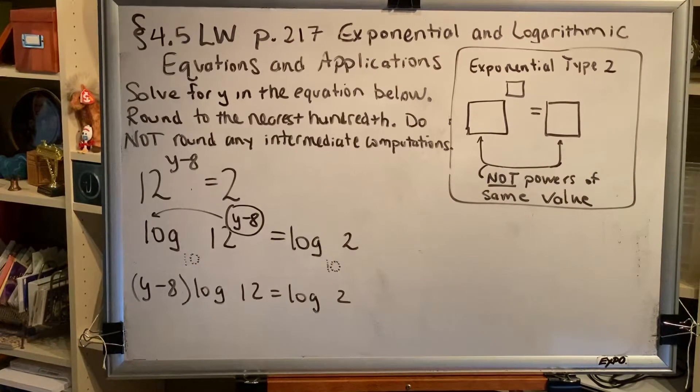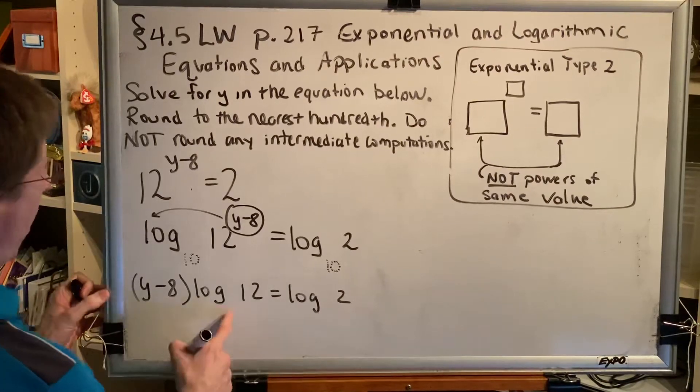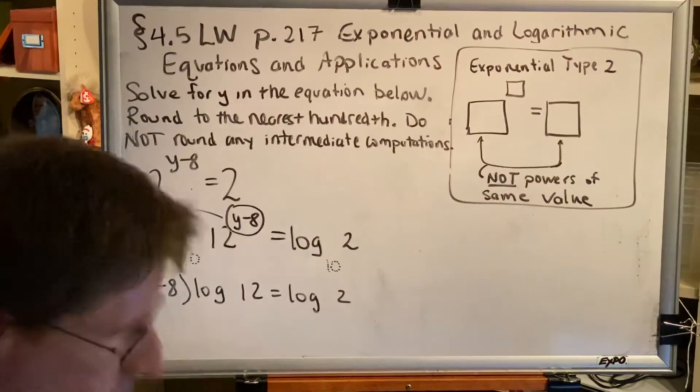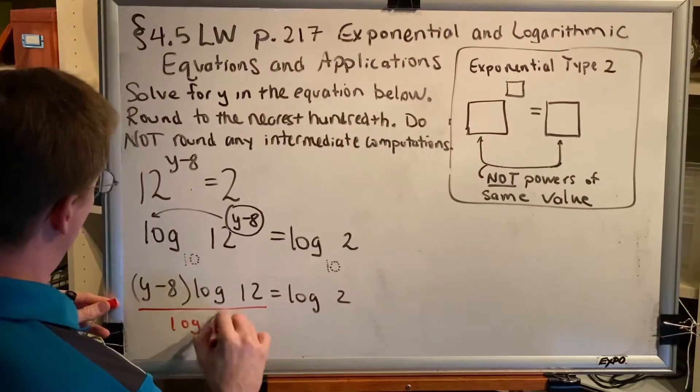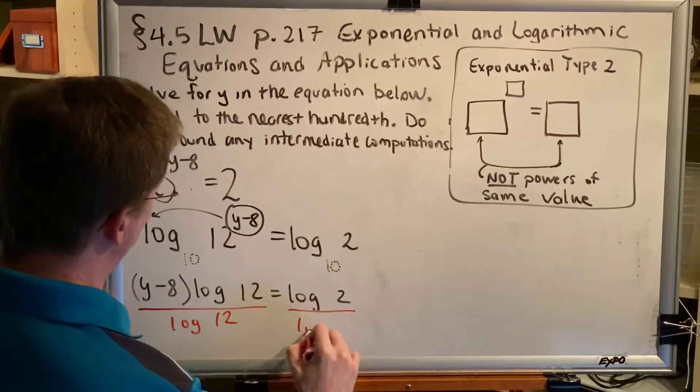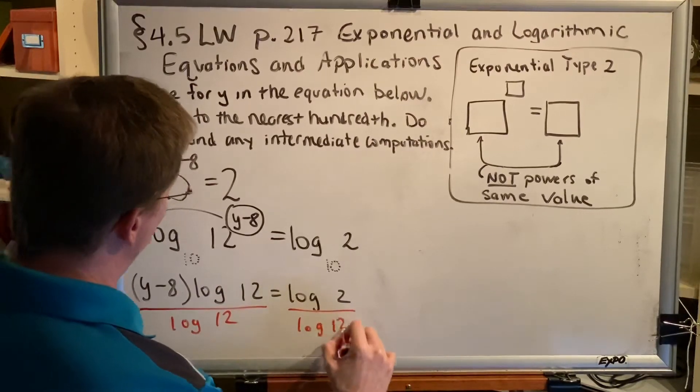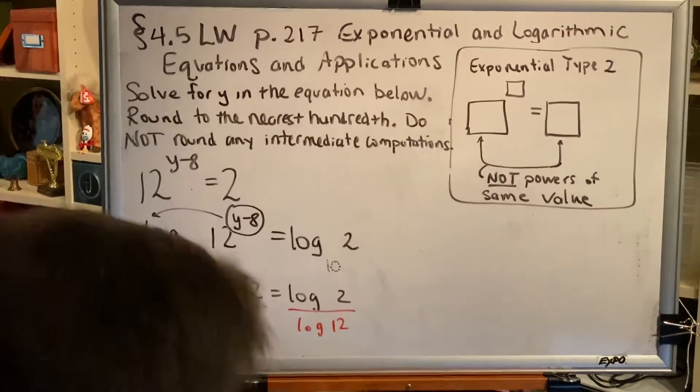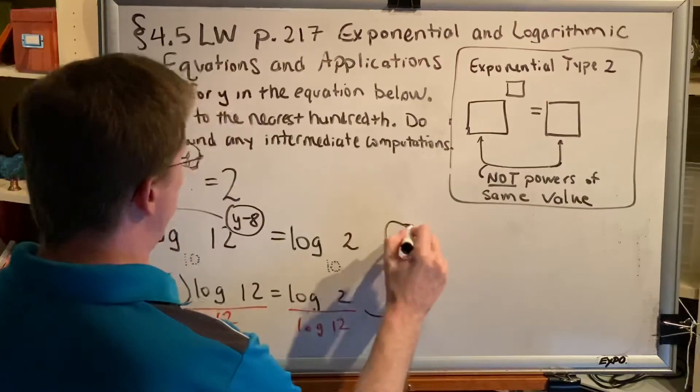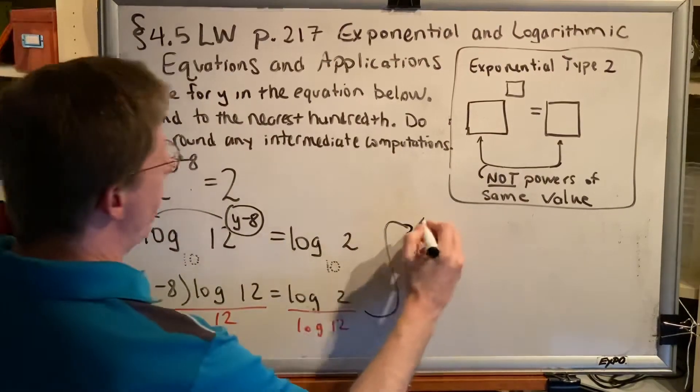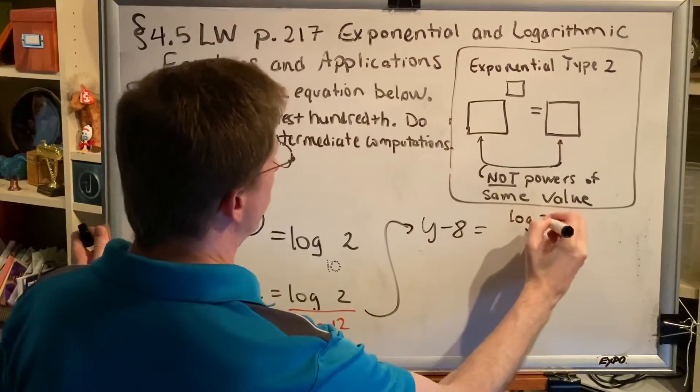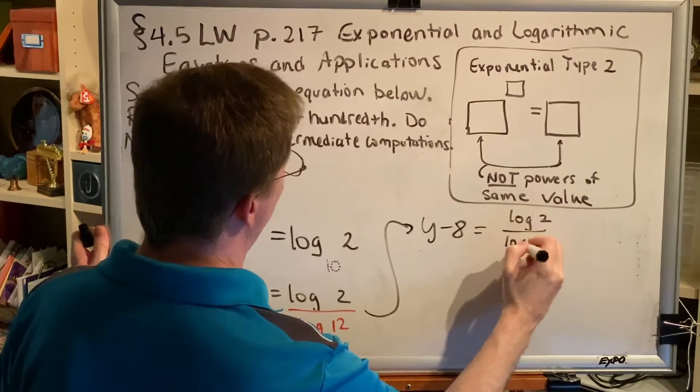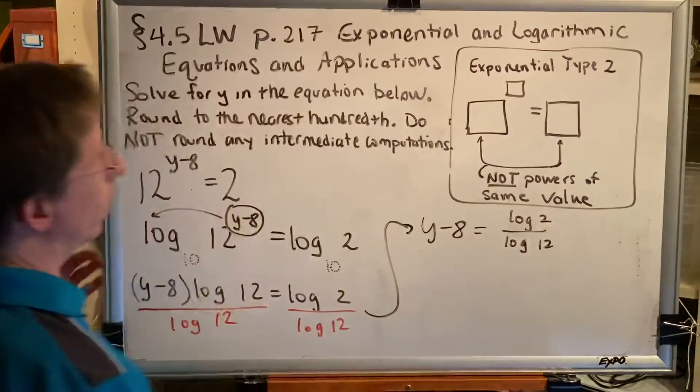The next thing I'm going to do is divide both sides by the log of 12. This is going to give me y minus 8 equals log of 2 divided by log of 12.